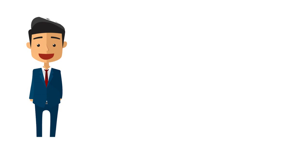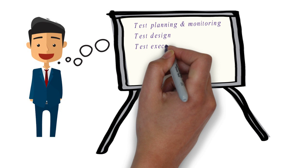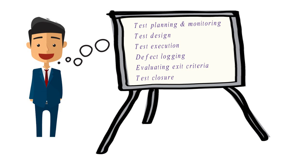The fundamental test process includes test planning and monitoring, test design, test execution, defect logging, evaluating exit criteria, and test closure. A plan is always required to carry out the testing properly. Once the plan is prepared, testing should happen according to the plan. Testing should always be monitored to understand its progress.